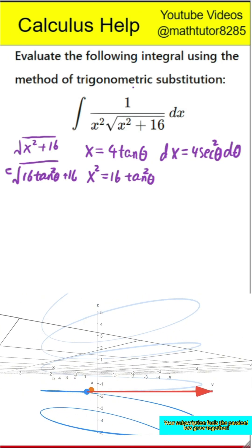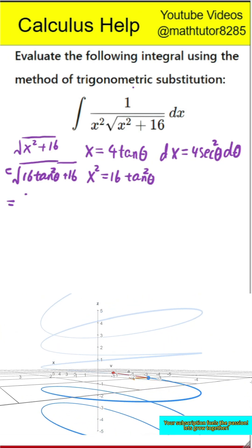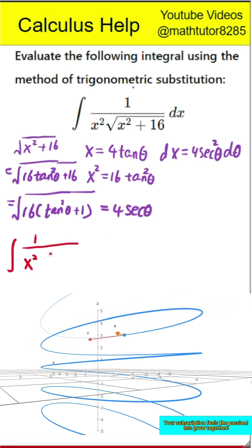Next step is to rewrite the integral using theta. Now we rewrite the entire integral in terms of theta. The denominator becomes 16 times tangent squared theta times 4 times secant theta and dx becomes 4 times secant squared theta d theta.